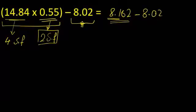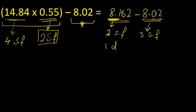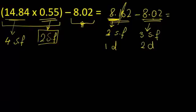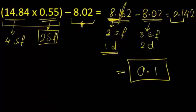For the result, we consider the multiplication part as two significant figures, which means the number stops at one decimal place. The other number, 8.02, has three significant figures and two decimals. Since we're doing subtraction, we follow the least number of decimals, which is one. The subtraction gives 0.142, but we include just one decimal, so the final answer is 0.1.